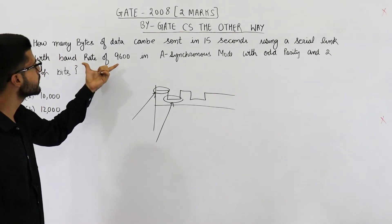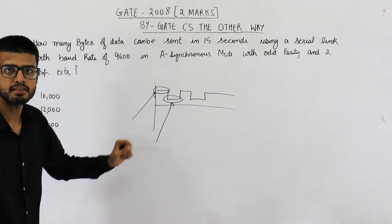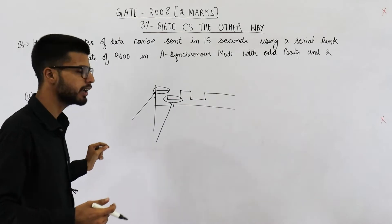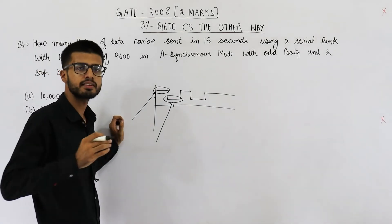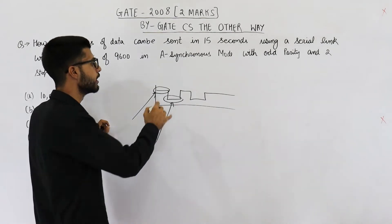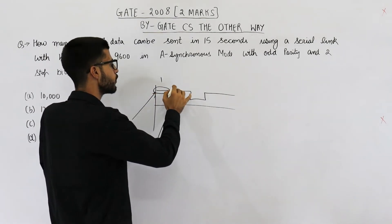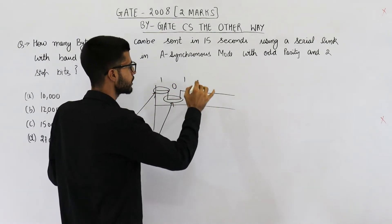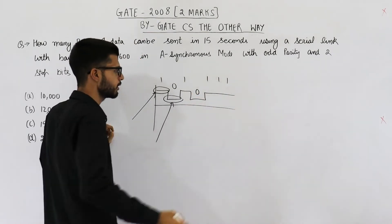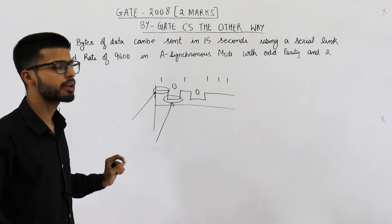They are saying you can send 9600 such signaling events every second. Now in serial communication, in serial ports, each signaling event is capable of representing one bit. That means high voltage means one, low voltage means zero, high voltage again means one, low voltage means zero. That means in simple words...